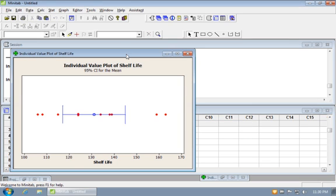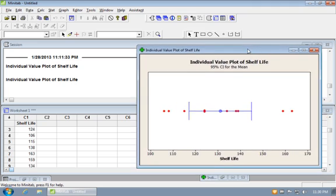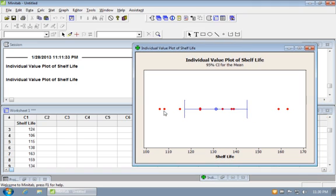And let's go ahead and go. And your plot might be vertical. This one I've set up to be horizontal to match our other plots. And we can see our red dots are the actual data. Shelf life is lower to the left, higher to the right. And here's our mean value, a little over 130. And here's our 95% confidence interval on the mean.